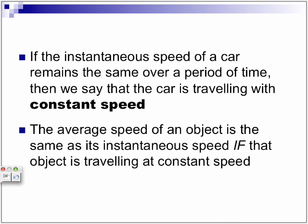If the instantaneous speed of a car remains the same over a period of time, then we say that the car is traveling at a constant speed. The average speed of an object is the same as its instantaneous speed if the object is traveling at this constant speed. So, instantaneous speed is different from average speed. But if the object is traveling consistently, imagine you having your car in cruise control. So, your car is in cruise control at 100 kilometers per hour, and it doesn't change over that period of time that you keep your vehicle at 100 kilometers per hour. If you're keeping that consistent, or keeping that as your constant speed, then yes, your instantaneous speed is the same as your average speed. But it can only be the same if you are traveling at a constant speed.